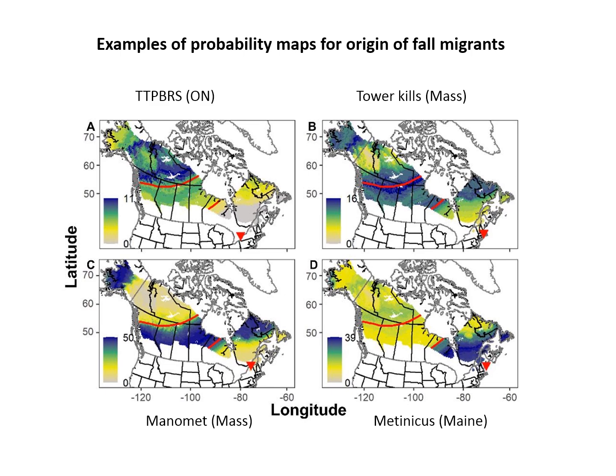On the upper left map here, birds from Tommy Thompson Park captured in fall — most of them are coming from the north region. The bluer the area, the darker the color, the more birds were likely to have come from that region.